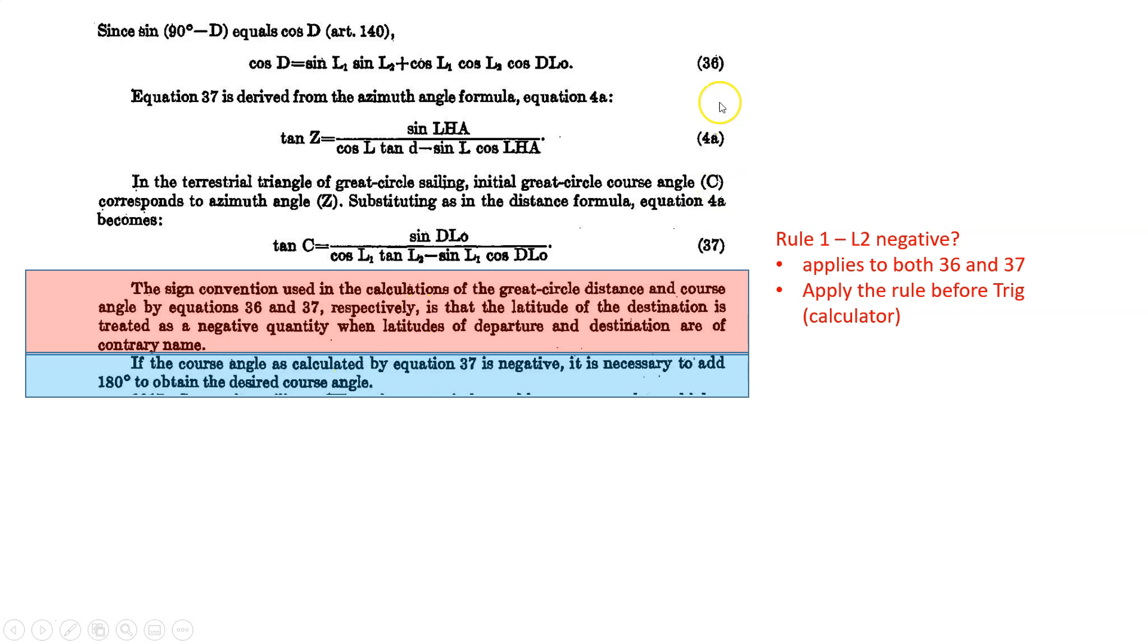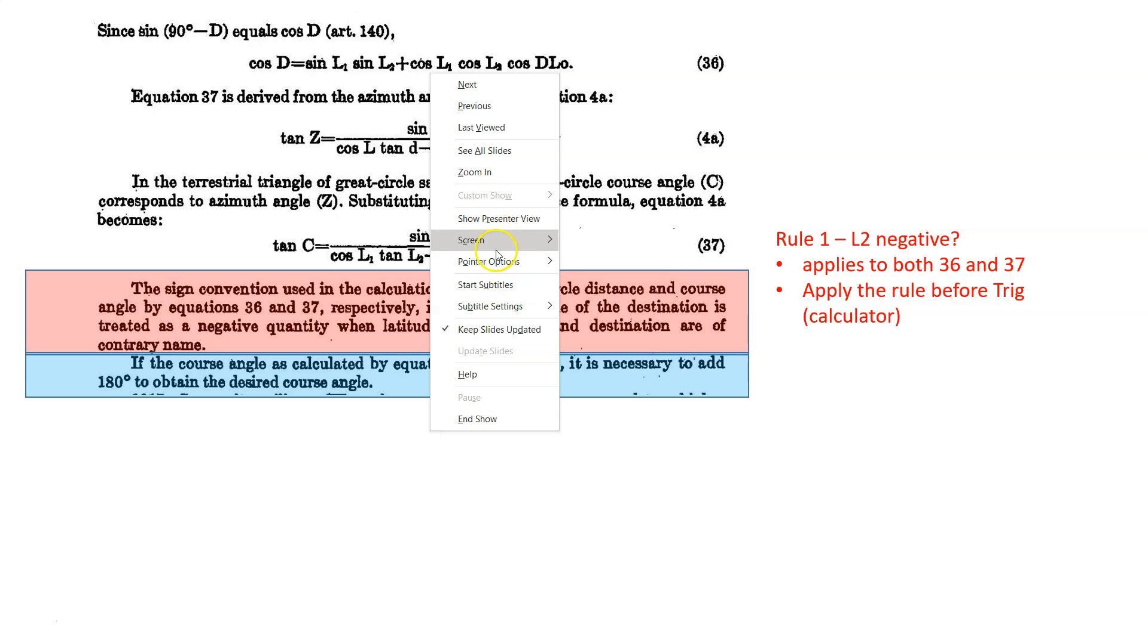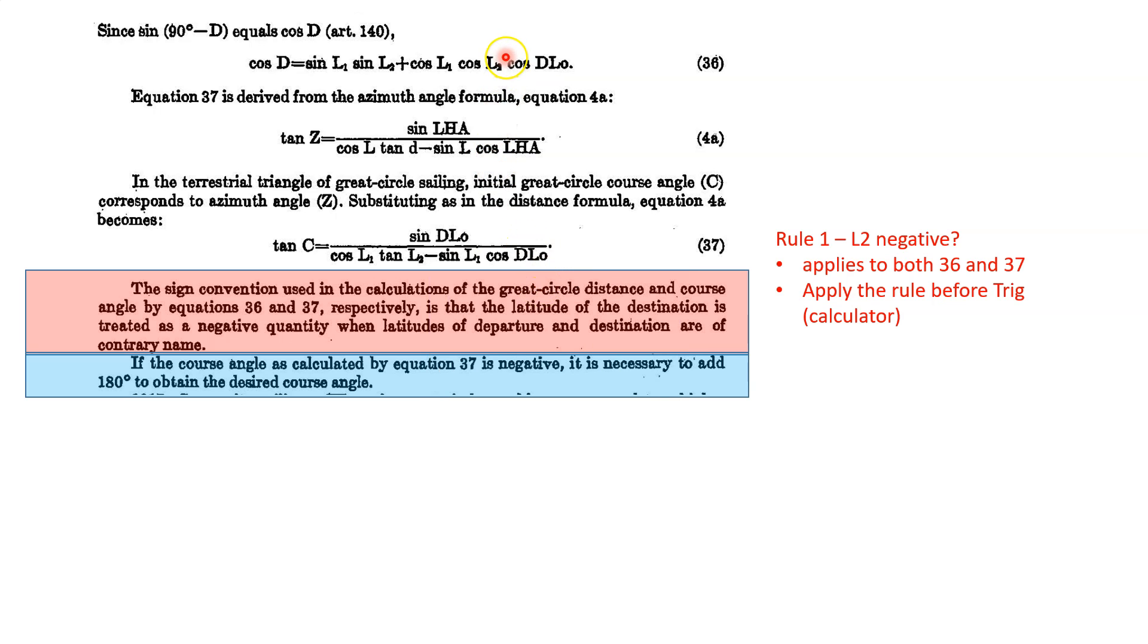The first rule, it's both formulas before the calculator. This rule, let me actually bring my pointer. Let me bring my laser pointer here. So Formula 36, Formula 37, rule 1 is for both of them before you use your calculator. But this rule 2, as I'm calling it, if your C, when you calculate this, so C equals, if you get a negative number, then this rule applies. If when you do this, C is positive, this rule does not apply.